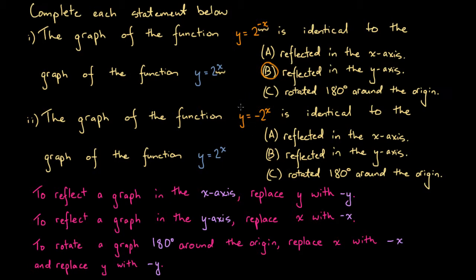Looking at this initially, it doesn't look like x has been replaced with minus x, and it doesn't look like y has been replaced with minus y. It doesn't look like the third option either, where both have been replaced. However, what we need to do is multiply both sides by minus 1 to get it into a clearer form. Doing that gives us minus y equals 2 to the power of x, because a negative times a negative is a positive. Then it becomes clear that the orange function is the same as the blue function, except y has been replaced with minus y.